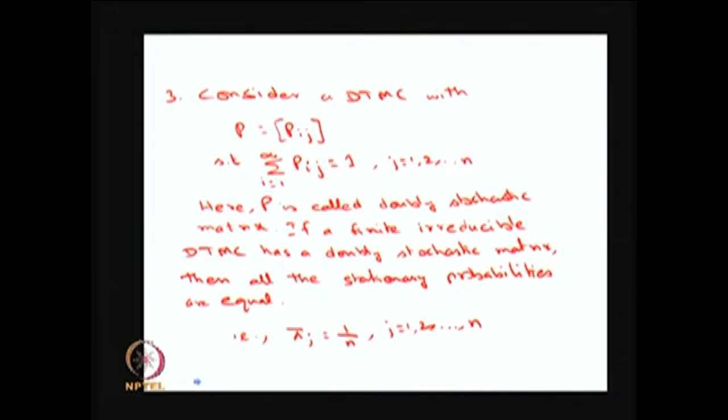If the Markov chain is finite, irreducible, and the one-step transition probability matrix is doubly stochastic, then the stationary probabilities exist and are uniformly distributed — that is, each value equals 1/n, where n is the number of states. To derive this, note that since it is a finite irreducible Markov chain, all states are positive recurrent.